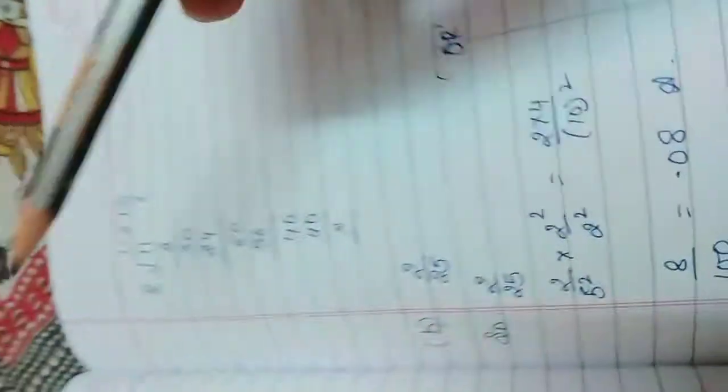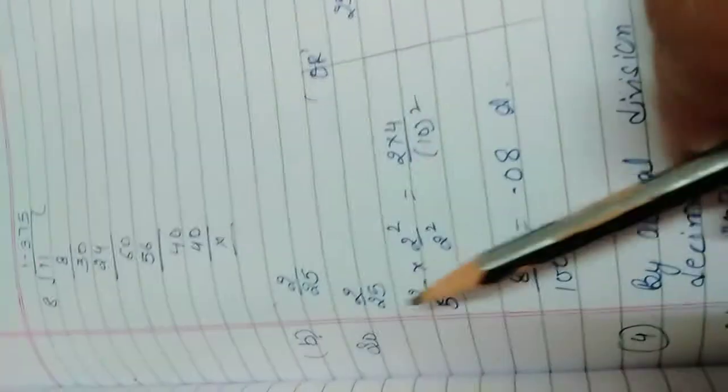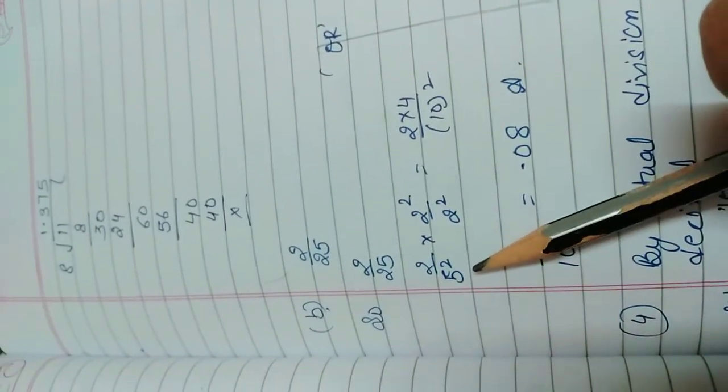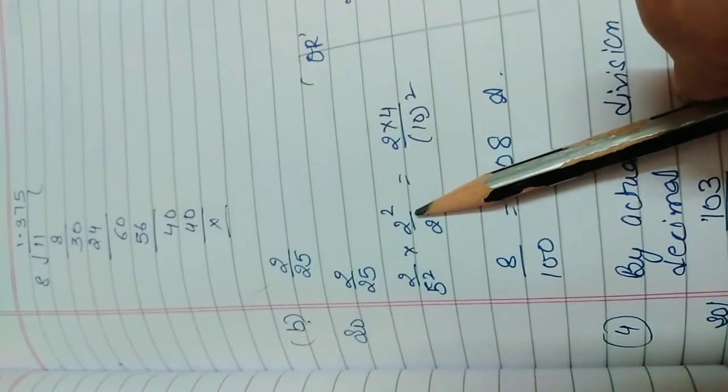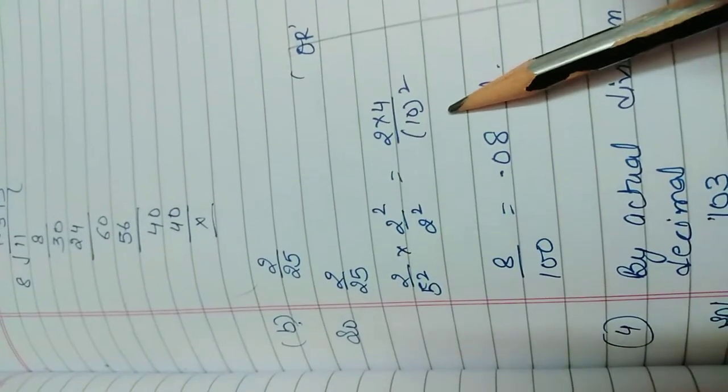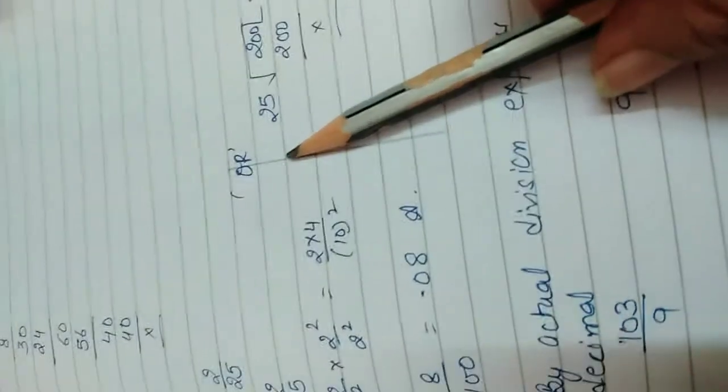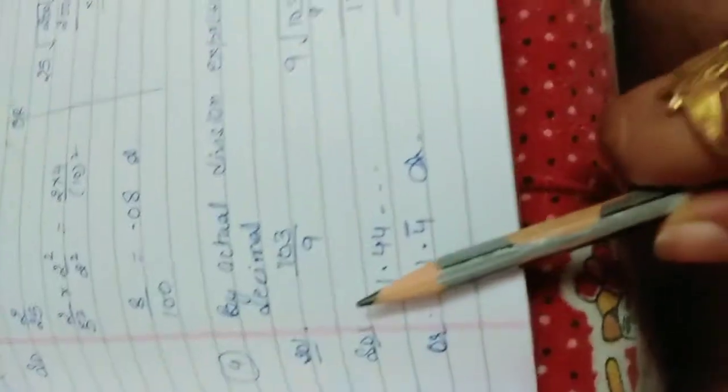But if you want to do the division, then you can also do with the division, same method. Here also we have 25, it means this is a square of 5, 5 squared. It means we have to multiply with the square of 2. So we get as 2 times 8 by 10 squared, that is 100.08. Similarly you can divide it. So this is your wish. If you understand this, then okay. If you are not, then you can apply this.